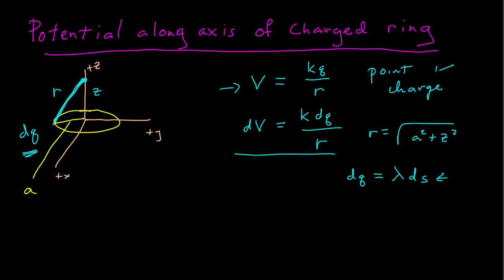So let's just go ahead and set that up here, where we have this dV which we will integrate is equal to K dQ over the square root of A squared plus Z squared.